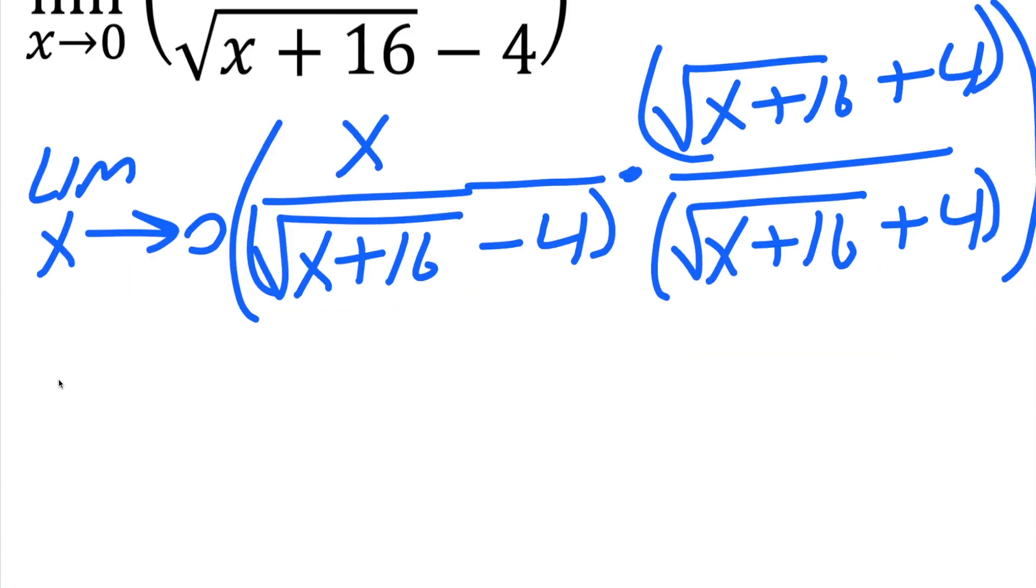our next step is to expand and multiply. So we're going to get the limit of x approaching 0, parentheses. In the numerator, we have x times parentheses, the square root of x plus 16, and then we have a plus 4, closed parentheses, divided by.